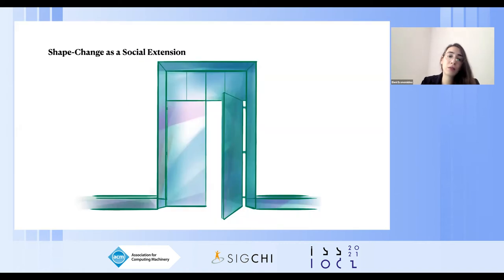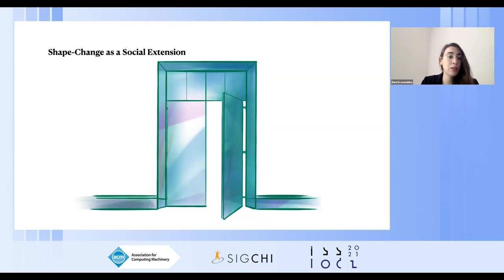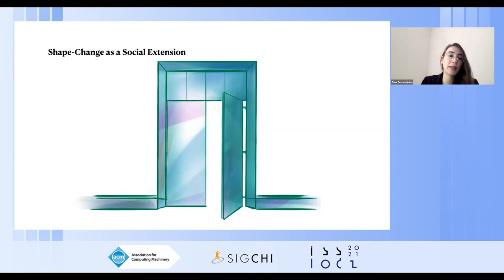By basing the door's behavior on the status of the room behind it, the door becomes a social object instead of just a functional one, and thus its affordances are extended into the social domain. The shape-changing door can become a social extension of the room. Its shape-changing behavior contributes to social translucence by making social information available. Visibility, awareness, accountability, and identity could be aspects of such socio-technical systems.